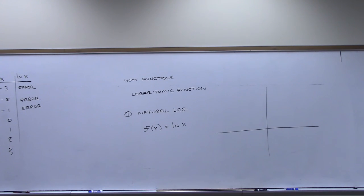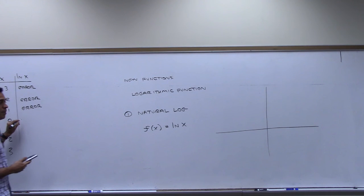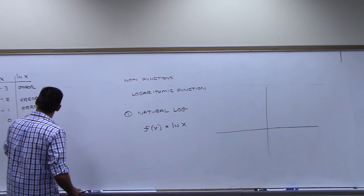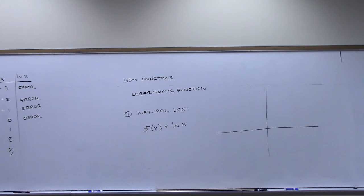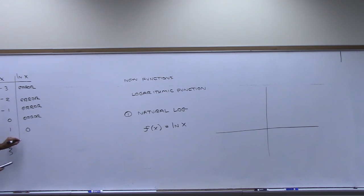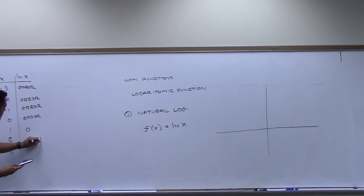You can't do negatives. Even if you put 0 in, you get an error. Now, 1 works. Natural log of 1 is 0. Natural log of 2 is 0.693141 something.